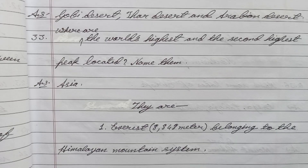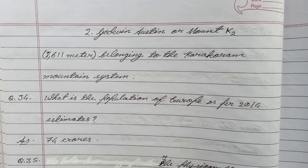Question 33: Where are the world's highest and the second highest peaks located? Name them. Answer: Asia. They are: number 1, Everest, belonging to the Himalayan mountain system; and number 2, Godwin Austen or Mount K2, belonging to the Karakoram mountain system.